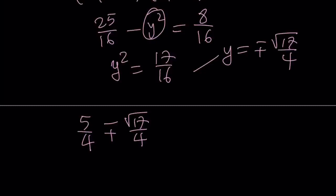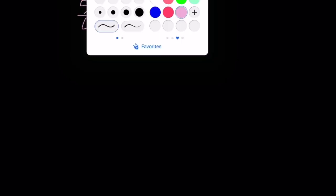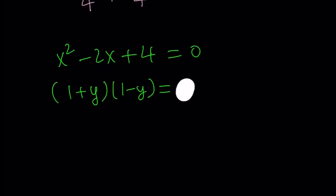One thing that I was going to tell you that is really cool about this method is that it also works when the solutions are not real. Let's take a look at x squared minus 2x plus 4 equals 0. I'm thinking about 1 plus y and 1 minus y. Let's multiply those together. I'm supposed to get 4. The product is 4.